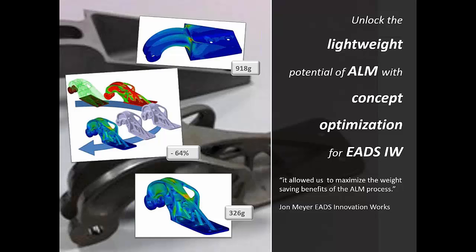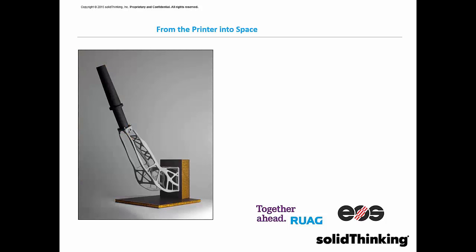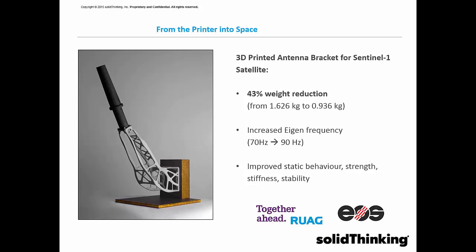This work is done by EADS, where they used Inspire for concept generation on their bracket, which they manufactured using ALM. They were able to reduce the mass by around 64%, which was quite significant. The next work is done by Ruach, who redesigned the antenna bracket of a central satellite — this part fits at a specific location. This was the first 3D printed bracket to go into the satellite. They reduced mass by around 43% and increased the frequency targets from 70 Hz to 90 Hz, improving static behavior, strength, stiffness and stability.